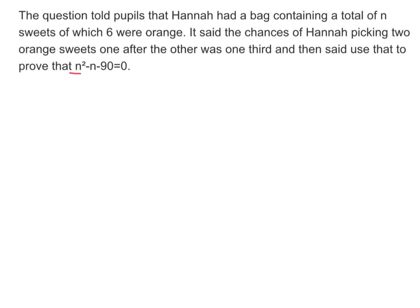Right, this question all over social media. That is the answer we're looking for. So probability of picking the first yellow sweet is 6 over the total. Probability of picking the second is 5 over the tail, and we're told that equals a third.